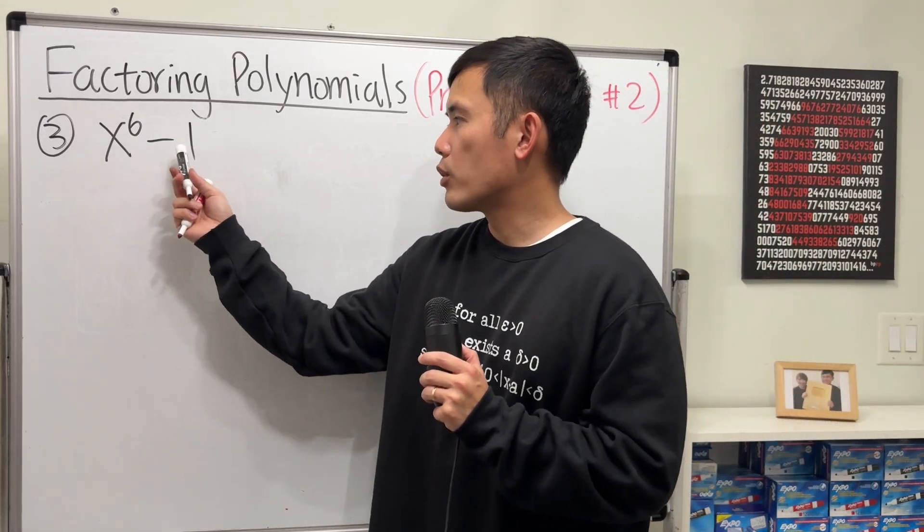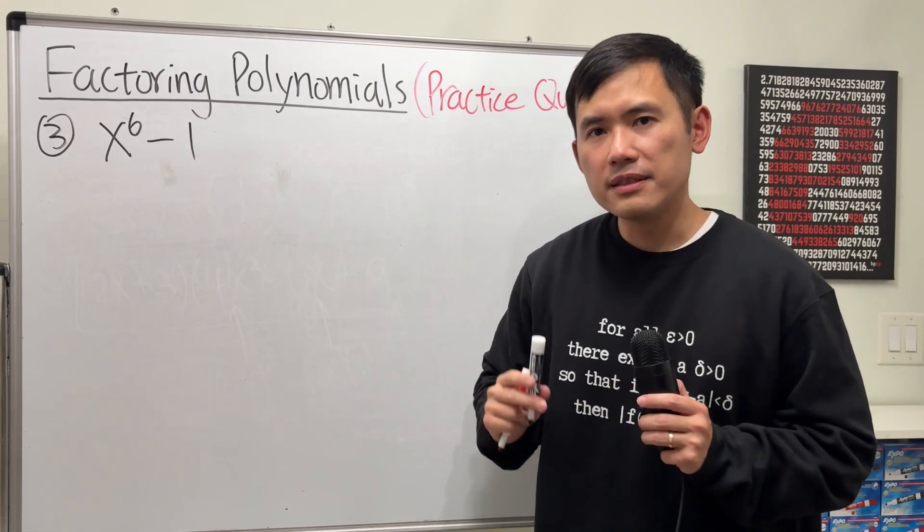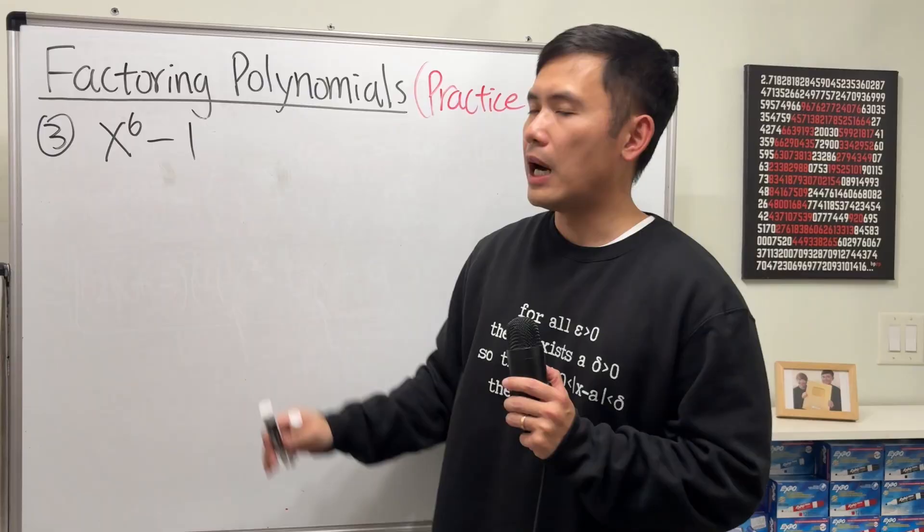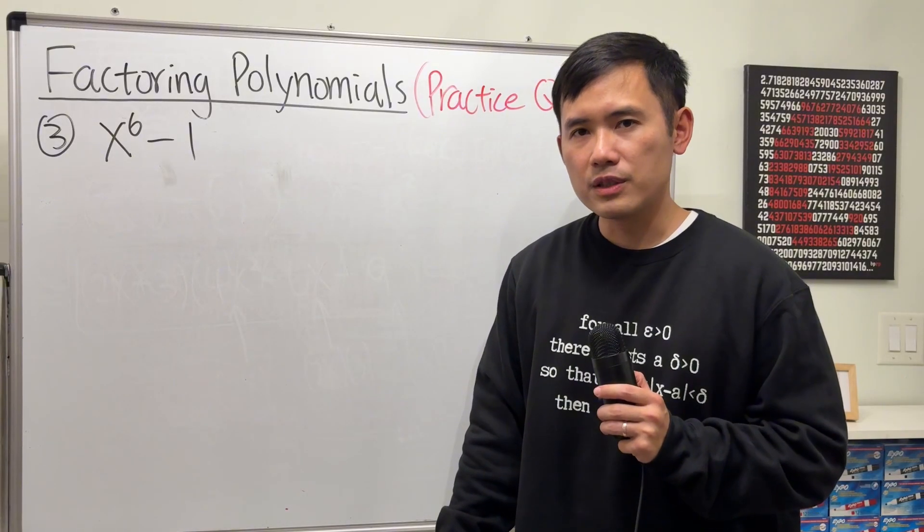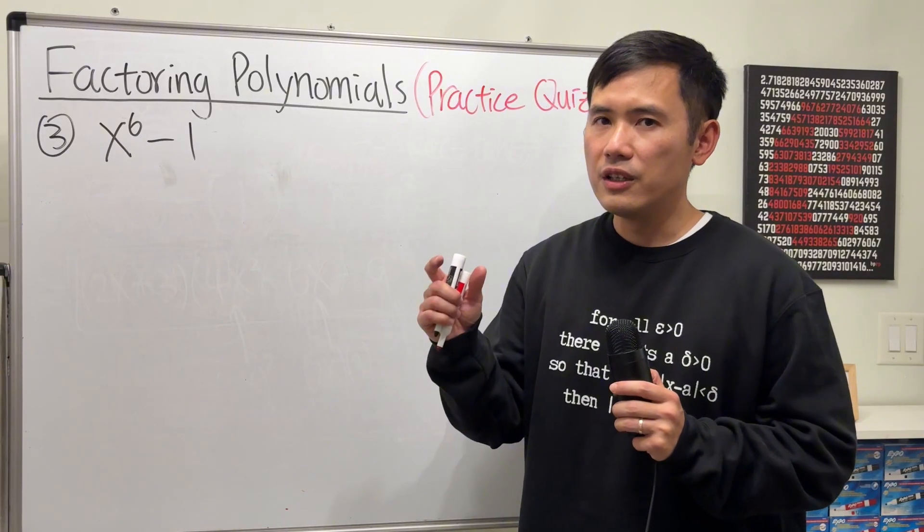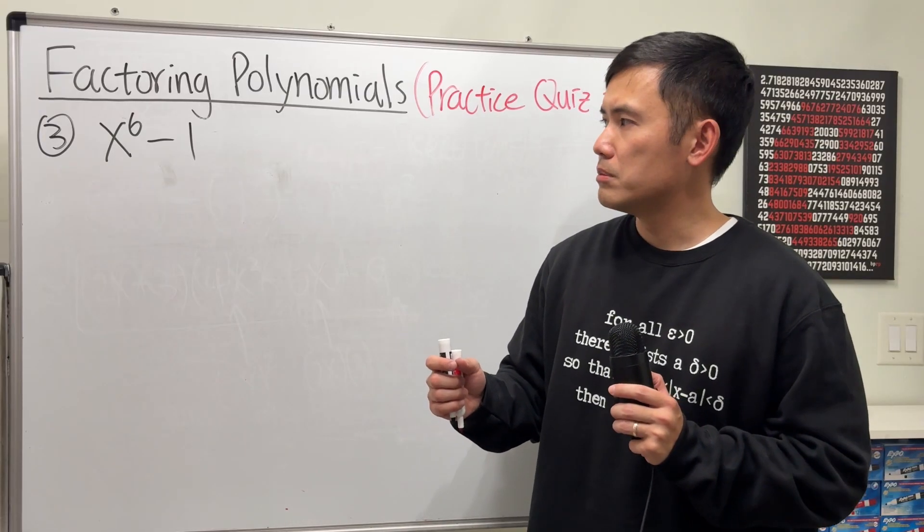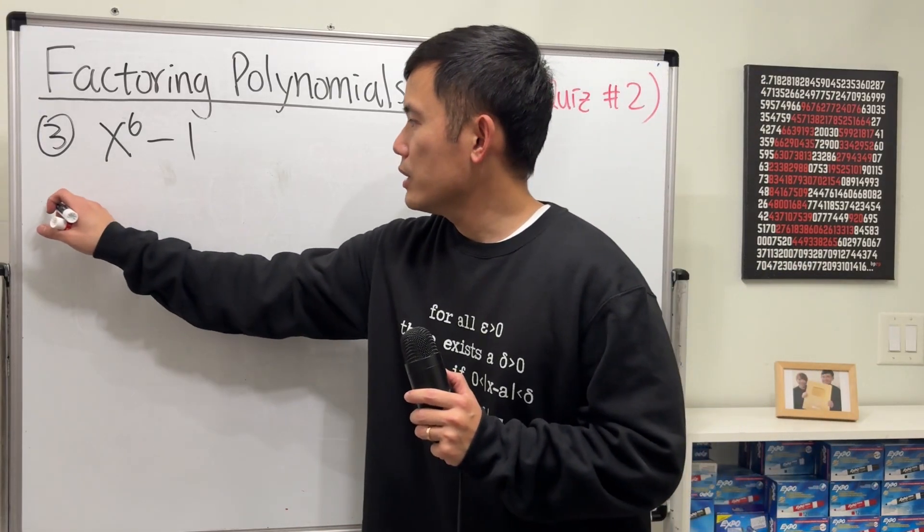Now for number 3, we have x⁶ - 1. This is a slightly harder one because do not look at this as the difference of two 6th powers. The reason is because we only have the formulas for the difference of two squares or the difference of two cubes. But which one do we do, though? Well, let me set this up first.